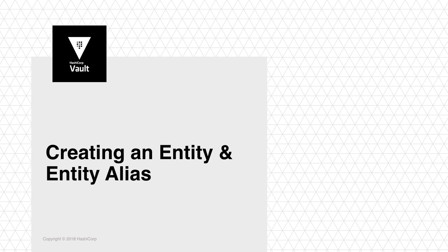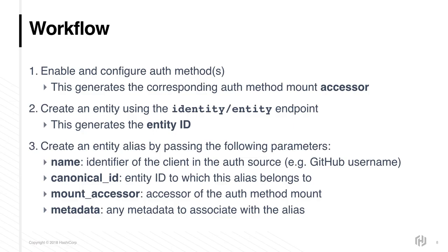In this section, we'll review how entities and entity aliases are created and managed. The Vault identity store allows administrators to manage entities within Vault. Entities can be created and aliases can be tied to entities. The typical workflow for creating an entity and or entity aliases involves the following steps. First, by enabling a Vault auth method, a corresponding auth method mount accessor will be generated. Next, an entity can be created using the identity entity endpoint, and this in turn generates an entity ID.